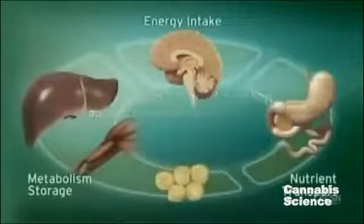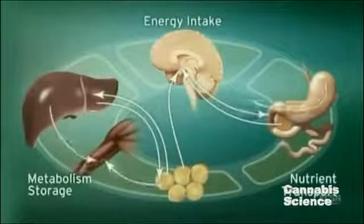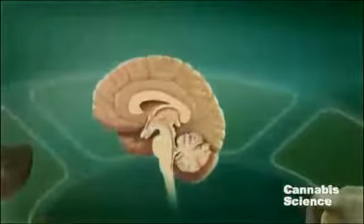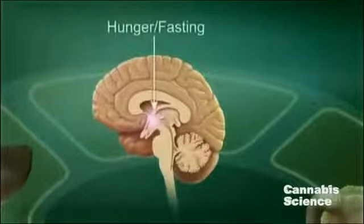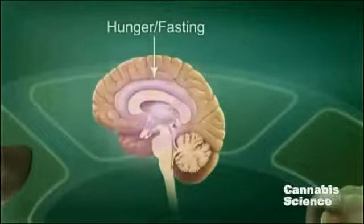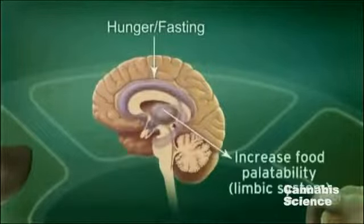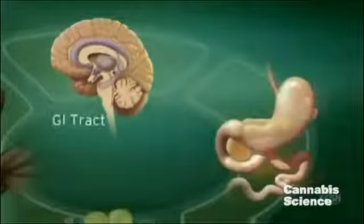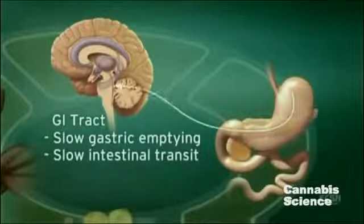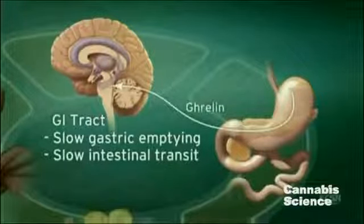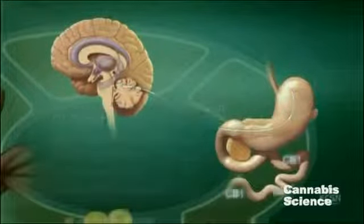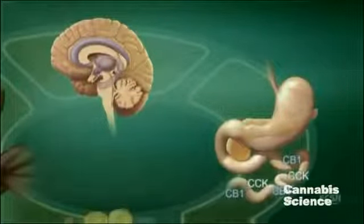Endocannabinoid system activity in the central nervous system regulates food intake. For example, ECS stimulation by hunger and fasting signals stimulates appetite and increases the palatability of food. Endocannabinoids slow gastric emptying and GI transit, and appear to stimulate secretion of ghrelin, a neuropeptide that increases appetite and food intake.